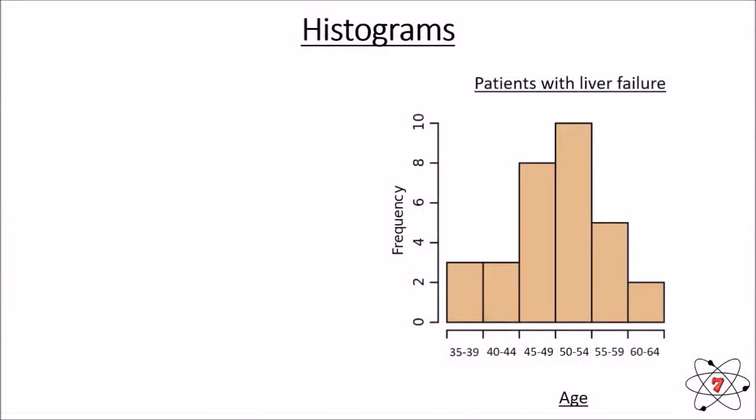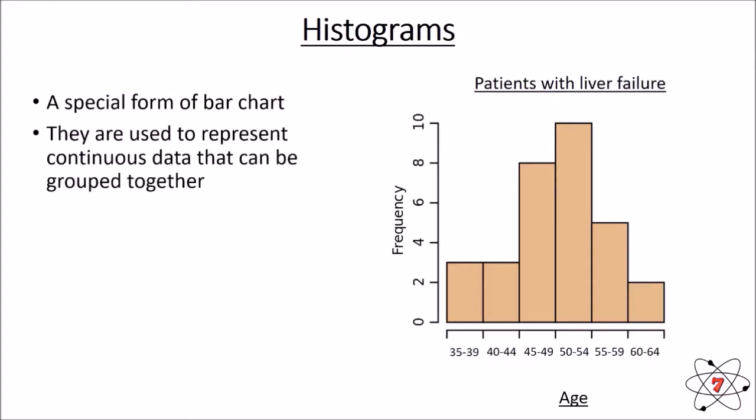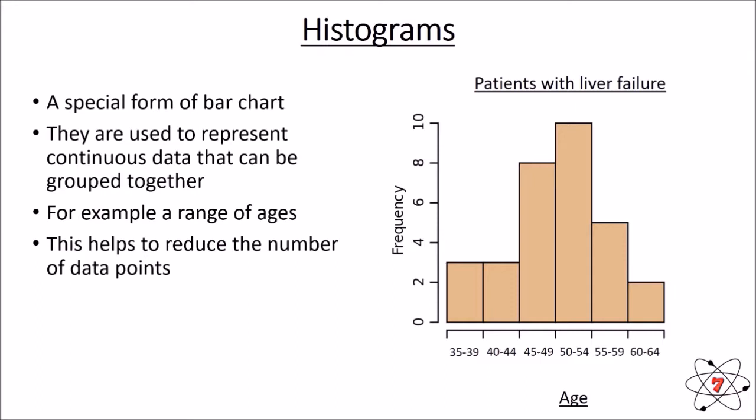A histogram is a special type of bar chart. Now, histograms are used to represent continuous data that can be grouped together. A good example of this is ranges of ages, anything with a range really. It helps reduce the overall number of data points. And unlike a bar chart, both the x and y values are drawn to scale.